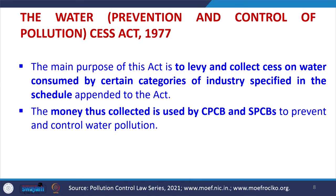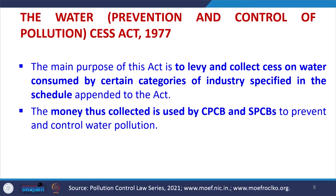The CES Act 1977 was passed to levy and collect a cess on water consumed by certain categories of industries. This was done because many industries take large amounts of groundwater and, after use, discharge it as wastewater. To meet permissible limits, some industries were diluting wastewater with additional groundwater, lowering groundwater levels. The cess levied on water consumed by these industries was used by CPCB and SPCB to prevent and control water pollution.